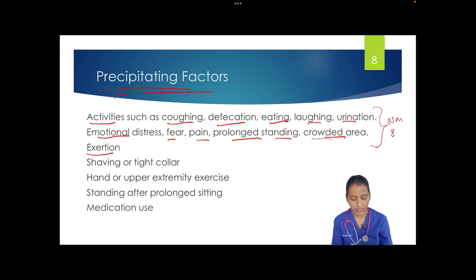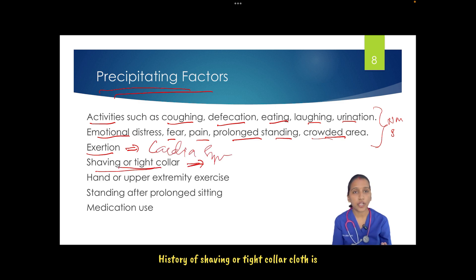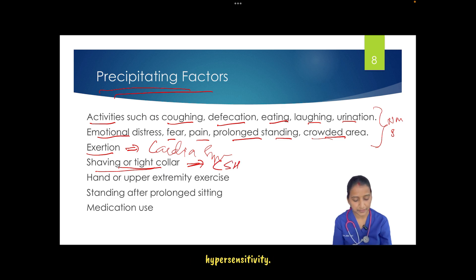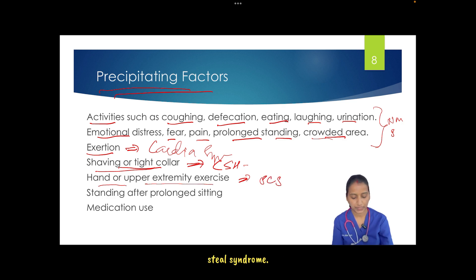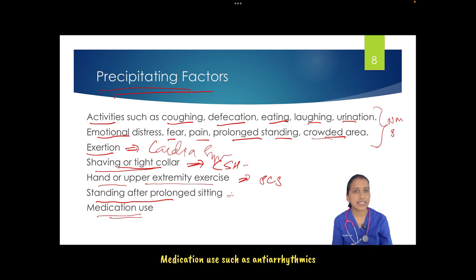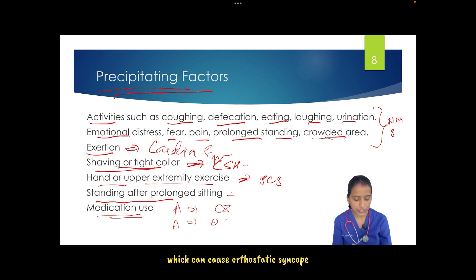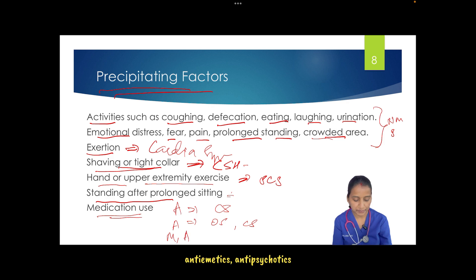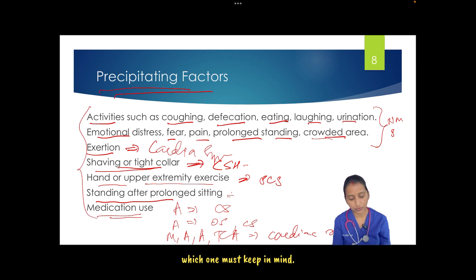History of exertion is important as it may indicate cardiac syncope. History of shaving or wearing a tight collar indicates carotid sinus hypersensitivity. History of hand or upper extremity exercise indicates subclavian steal syndrome. History of standing after prolonged sitting is also important. Medication use — antiarrhythmics can cause cardiac syncope; antihypertensives can cause orthostatic and cardiac syncope; macrolides, antiemetics, antipsychotics, and TCAs can cause cardiac syncope.